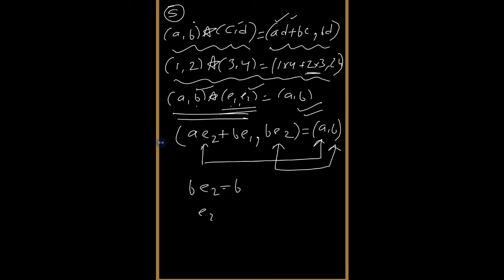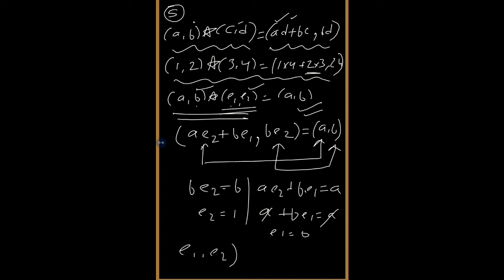So e₂ gives us 1. Then a·e₁ + b·e₁ = a, and b·e₁ = a. A cancels out, so e₁ = 0. Therefore the identity element is (e₁, e₂) = (0, 1). In this way we can find out the identity element.